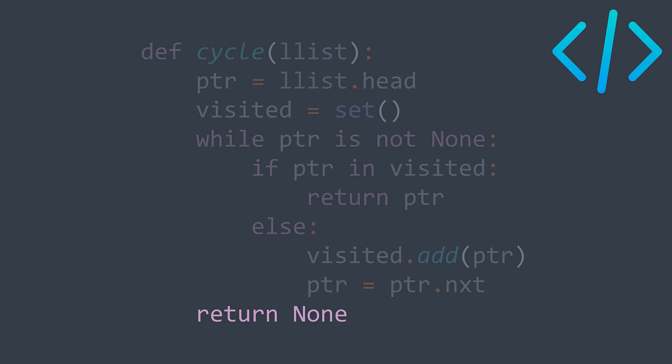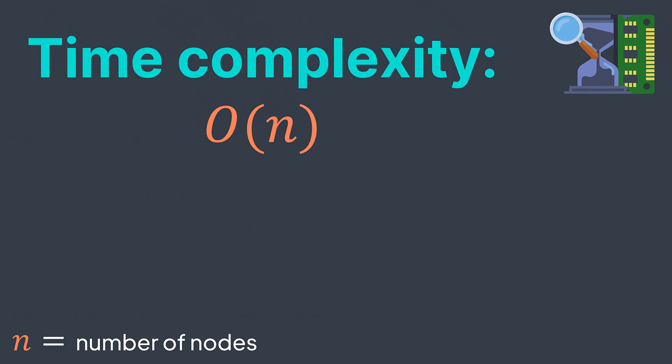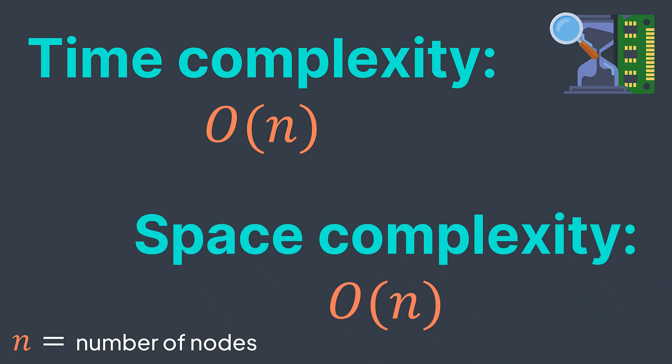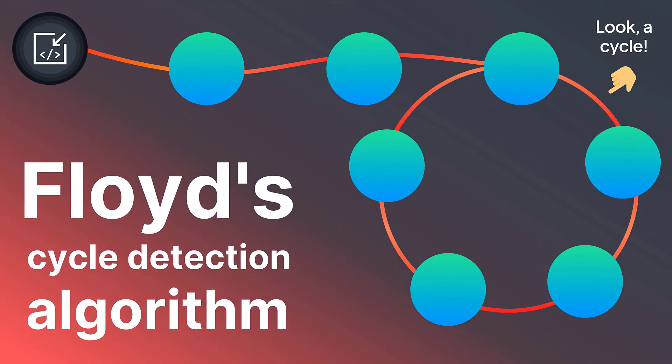The time complexity of this function is O(n), where n is the number of nodes, because we're just traversing the list. But the space complexity is also O(n) because we're storing all the nodes in the set. What if we can detect a cycle in O(n) time but O(1) space by using the Floyd cycle detection algorithm, also called the tortoise and hare algorithm?